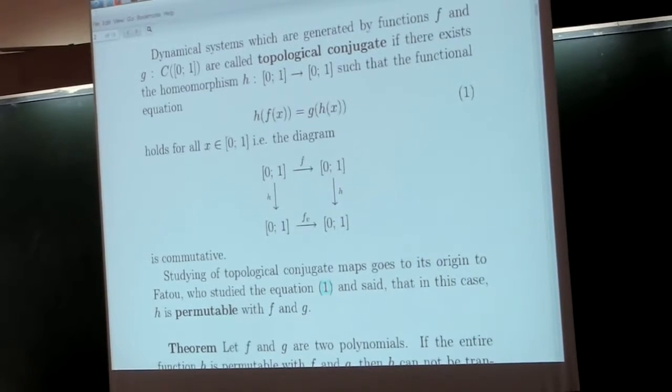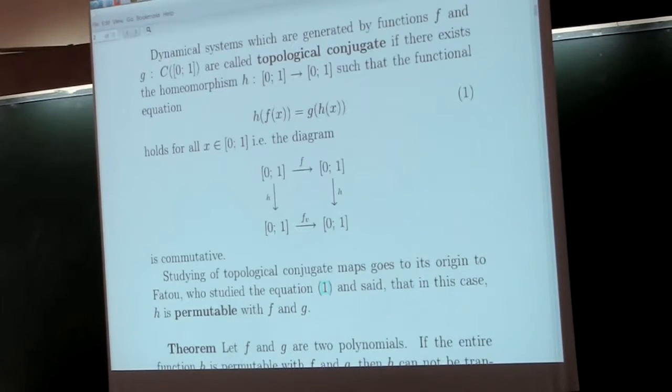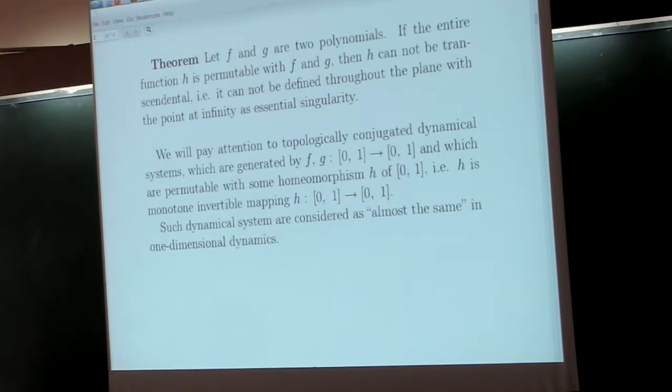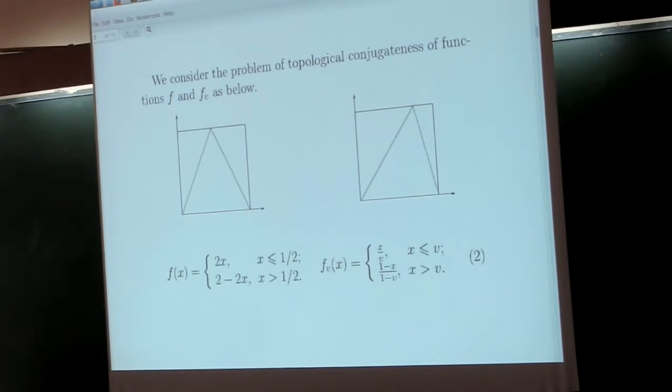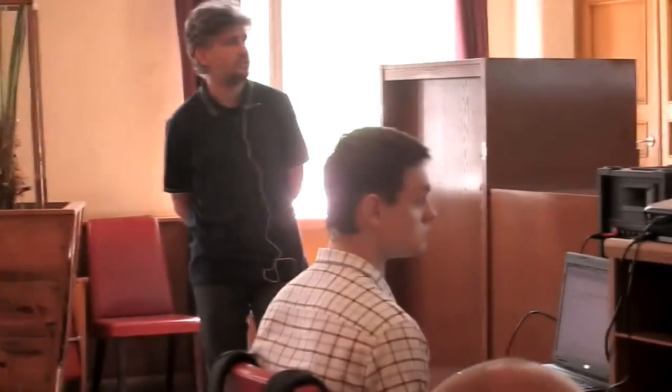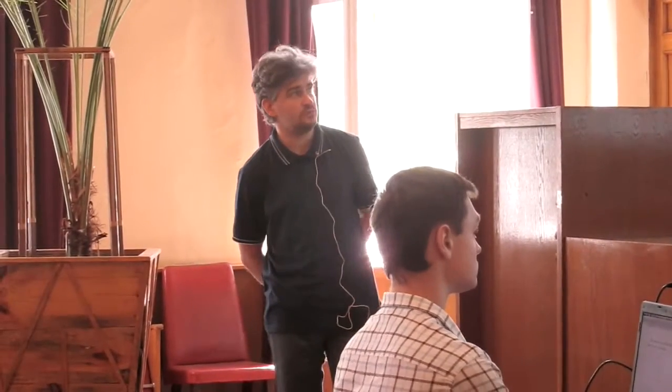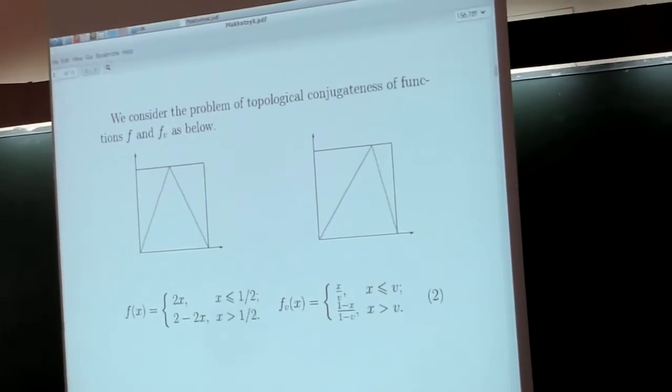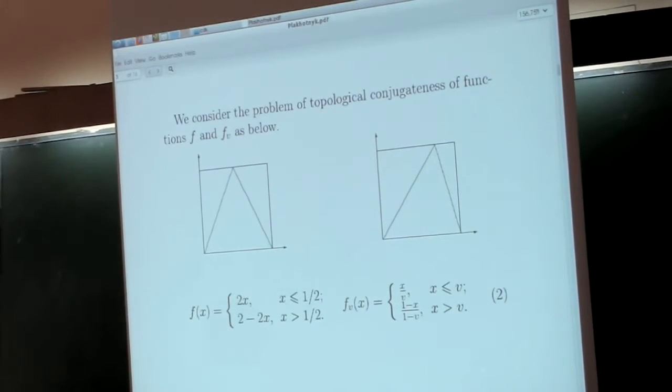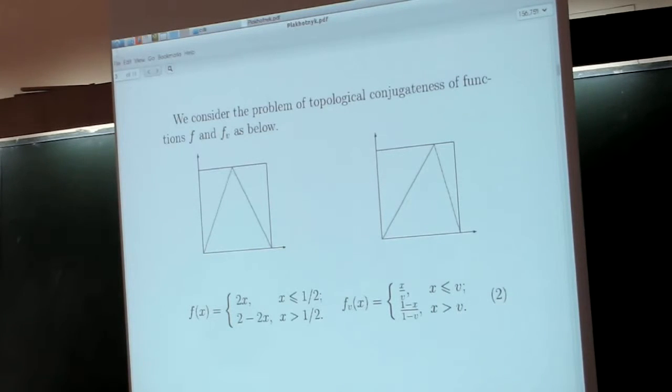We consider topological conjugation of permutable functions. First is the usual tent map defined on the interval [0,1], and another is a piecewise linear map defined on [0,1], whose graph is on the picture on the right. It increases and decreases, but its maximum point is not at half, but somewhere between 0 and 1.